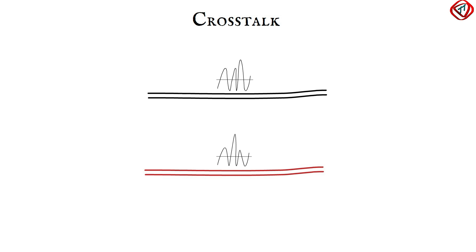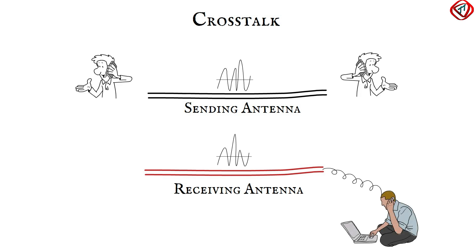In crosstalk, the signal in one wire affects the signal in the other wire. One wire acts as a sending antenna and the other wire acts as a receiving antenna. Crosstalk could cause you to hear someone else's conversation.